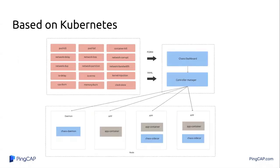The first advantage is that Chaos Mesh is based on Kubernetes. Because we want to test a cloud-native database, it should run on the cloud. Kubernetes is essentially the operating system of the cloud. Chaos Mesh runs on Kubernetes and uses some hacky ways — it runs as a DaemonSet and can also run as a sidecar on Kubernetes directly. Using these two approaches, your application or system doesn't know anything about Chaos Mesh.